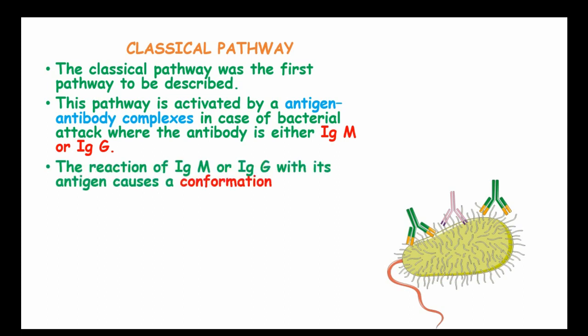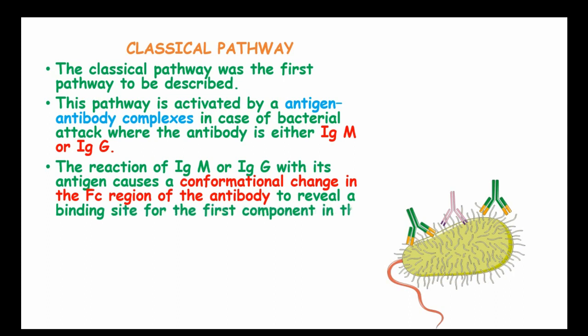The reaction of immunoglobulin M and IgG with its antigen causes a conformational change in the FC portion of the antibody to reveal the binding site for the first component in the classical pathway which is C1Q.